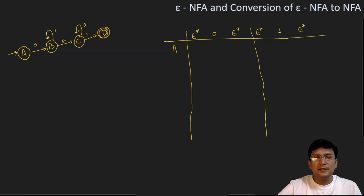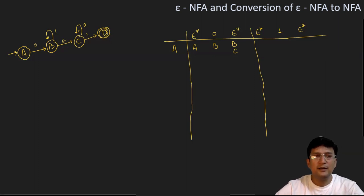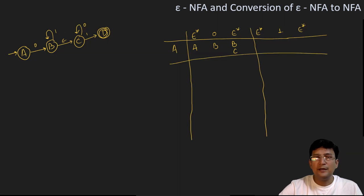A is the start state. Looking at the transition of A with symbol epsilon, A moves to only A by taking epsilon. So epsilon closure of A will be just {A} — a state can move to itself by taking the epsilon symbol. Now A on zero moves to B, and the epsilon closure of B is B itself. We can also move to C by taking epsilon. So epsilon closure of A on zero gives {B, C}.